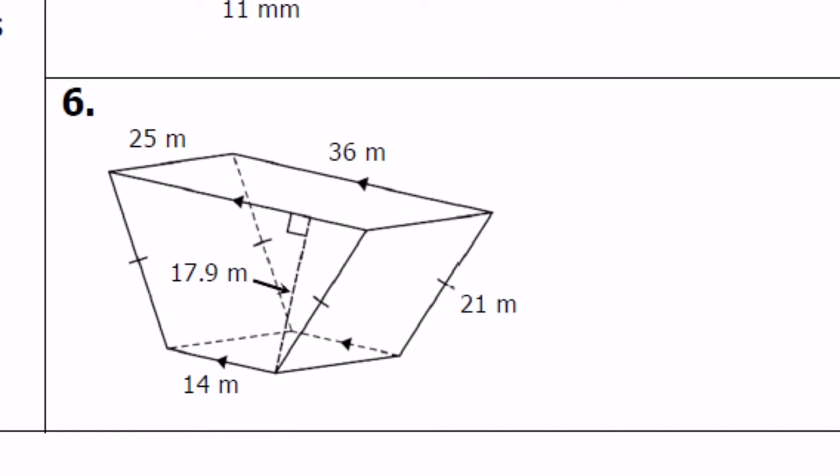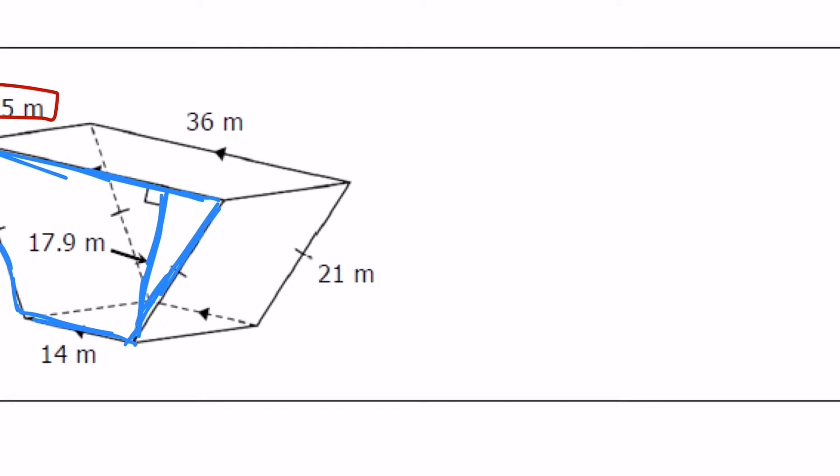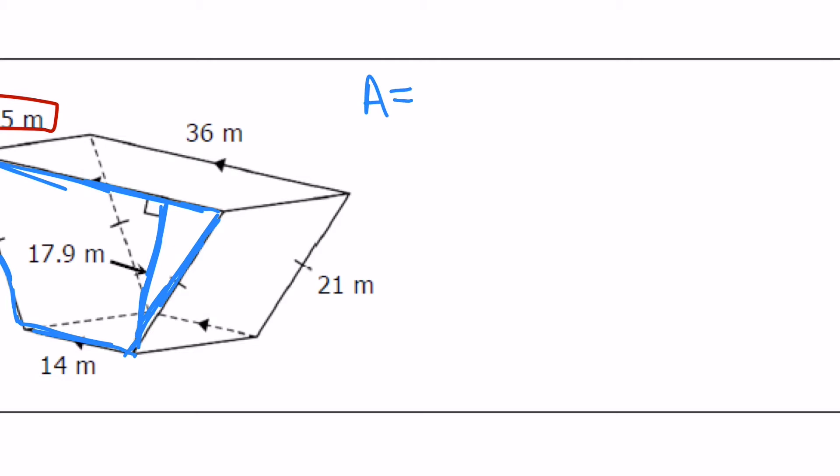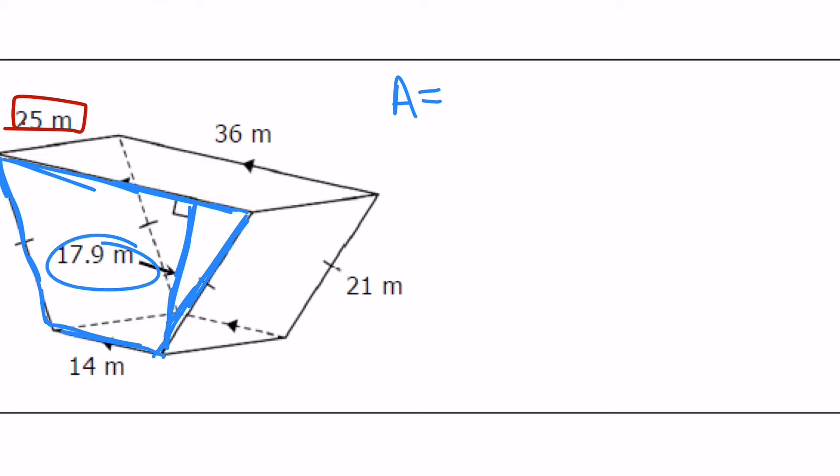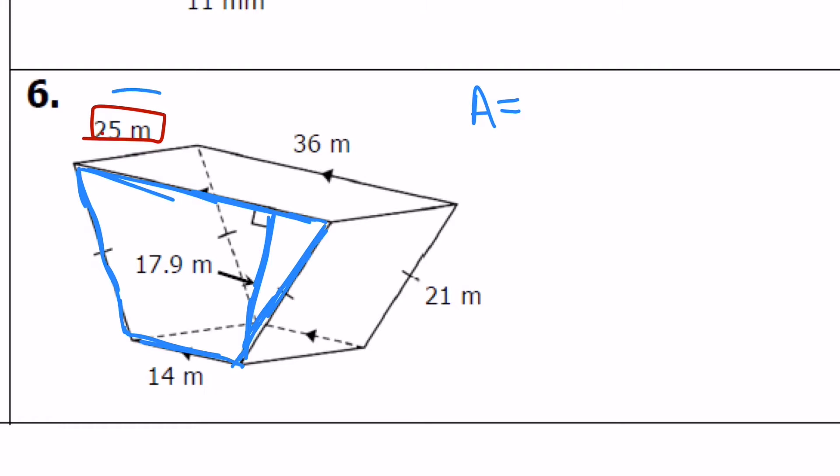If you're looking at number six again this is a trapezoidal prism so this is one where you would find the area of this trapezoid right here and then multiply that by the height. The height in this case is 25 meters. The height of the prism not the height of the shape. So here's the height of the prism, 25 meters. This is the height of the trapezoid. So when you're dealing with your area of a trapezoid you're going to use this, then when you're going into the volume you're going to use this height.